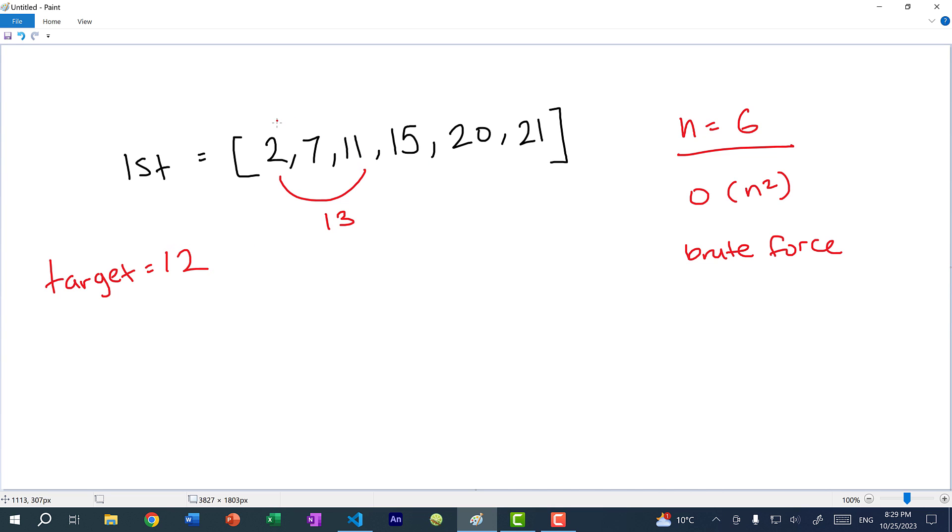Why? Because the list is sorted and 2 plus 11 is already bigger than 12. So there is no need to check any number past this point because we know that every number past this point is going to be bigger than 11. So we are doing a lot of unnecessary work by checking these combinations.